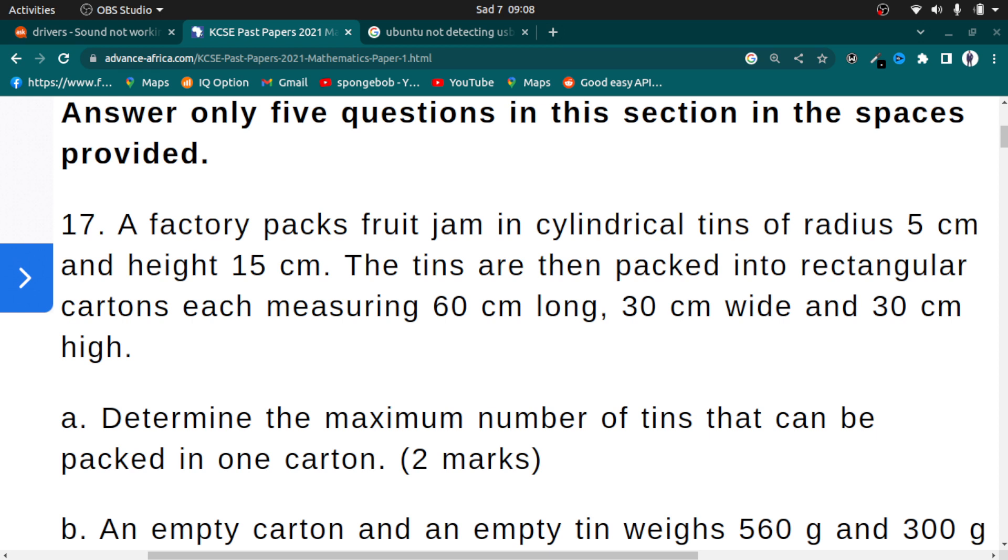A factory packs fruit jam in cylindrical tins of radius 5 centimeters and height 15 centimeters. The tins are then packed into rectangular cartons, each measuring 60 centimeters long, 30 centimeters wide, and 30 centimeters high. The first question is, determine the maximum number of tins that can be packed in one carton.